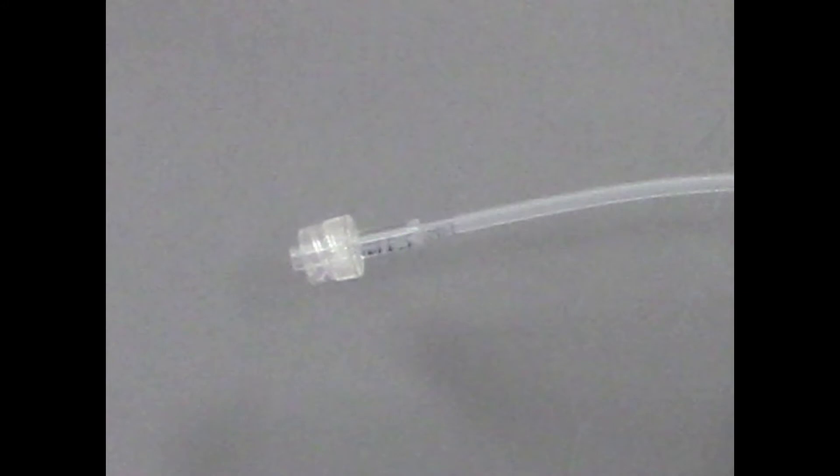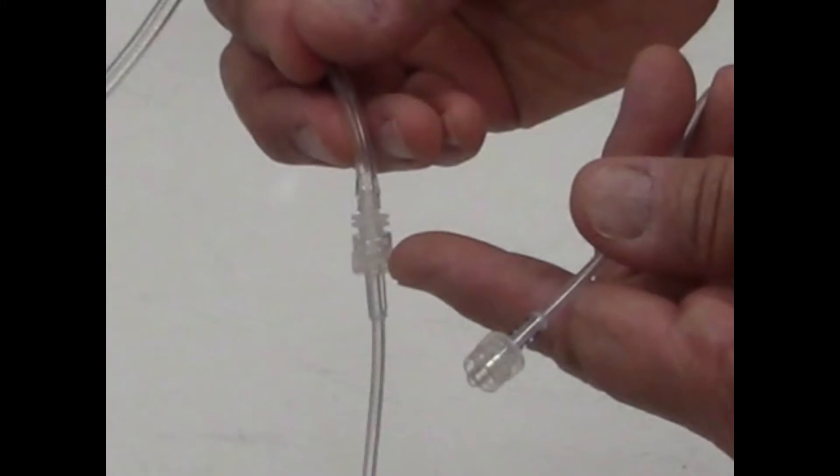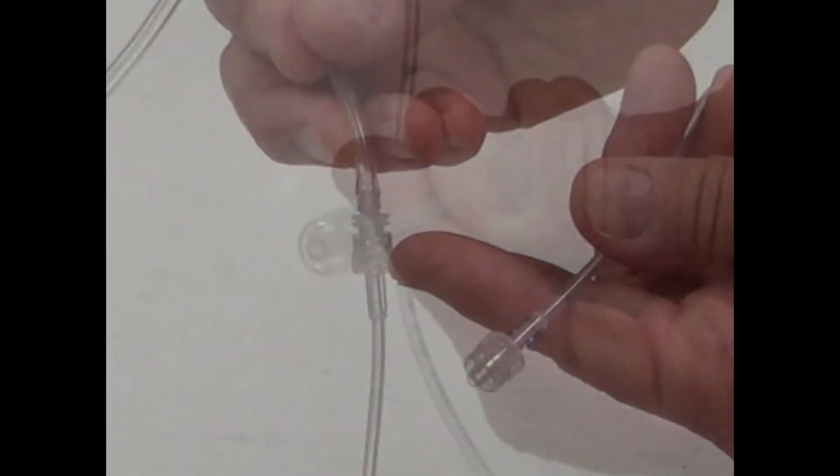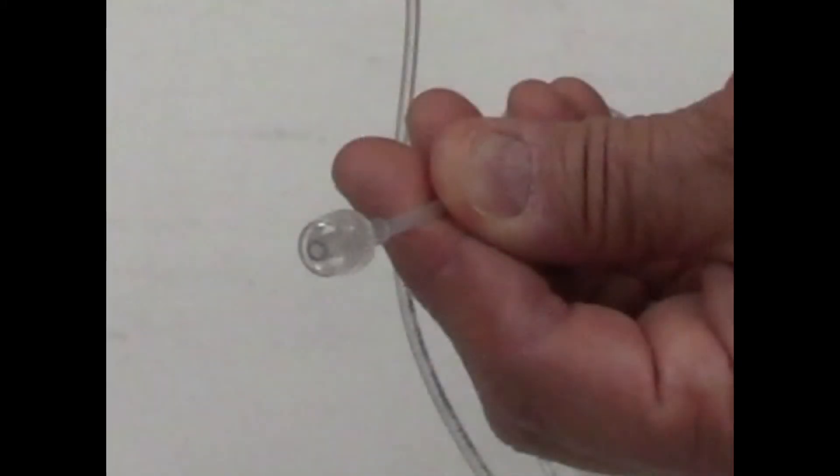This is a standard sample catheter. One end will be attached to the regulator tubing, and the other end will connect to the gas module to be calibrated.